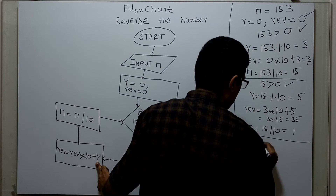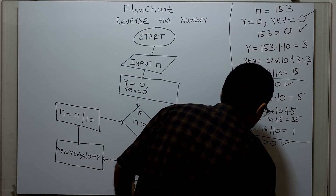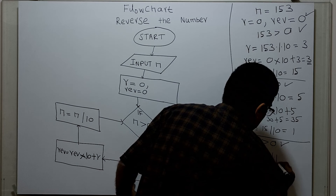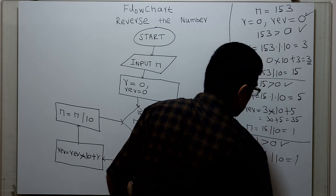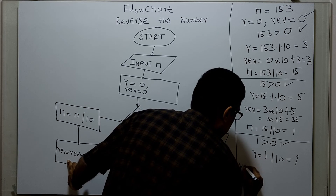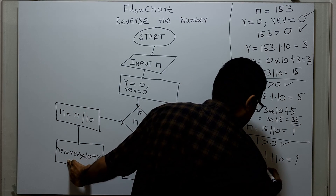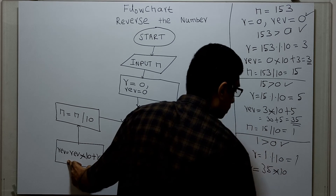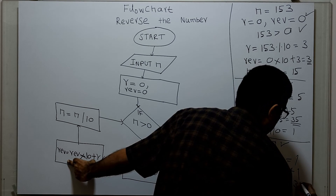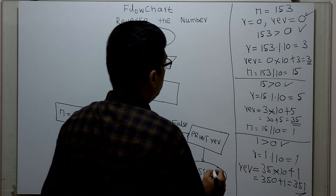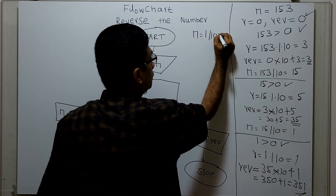Checking: 1 greater than 0 — true. Then R equal to 1 mod 10. Since 1 is less than 10, R equal to 1. REV equal to REV multiplied by 10 plus R. REV is 35, so 35 multiplied by 10 plus 1 equals 351. Now N equal to 1 divided by 10 which is 0.1 — integer division — the value of N is 0.